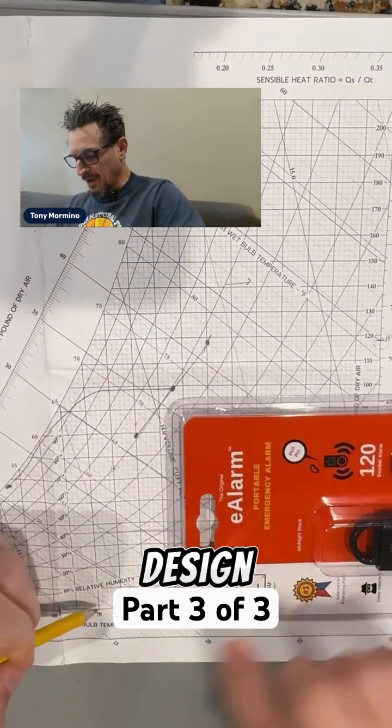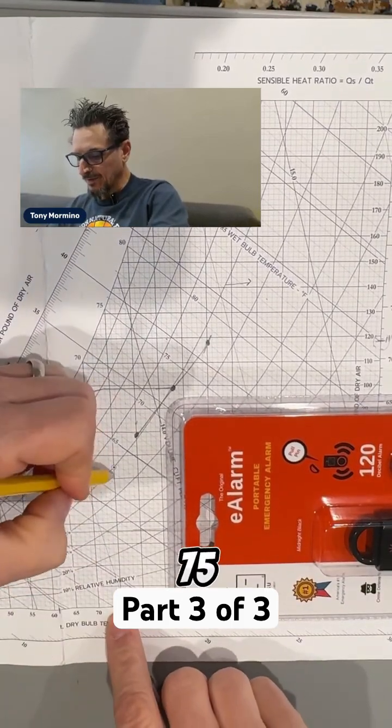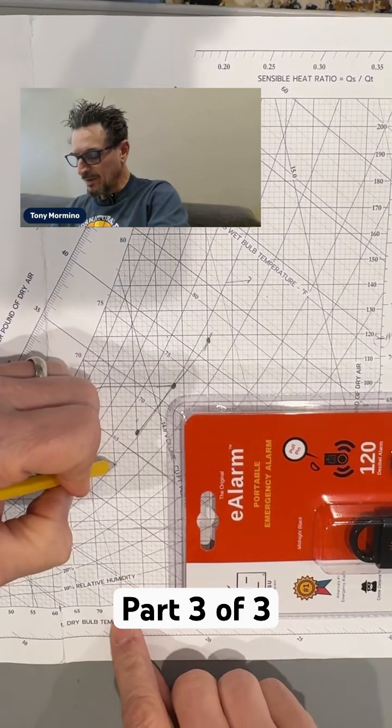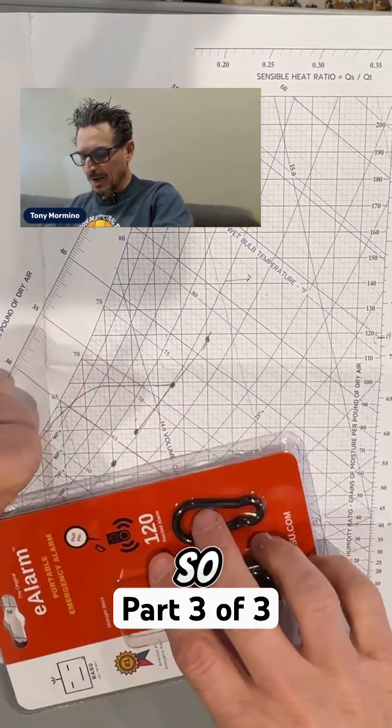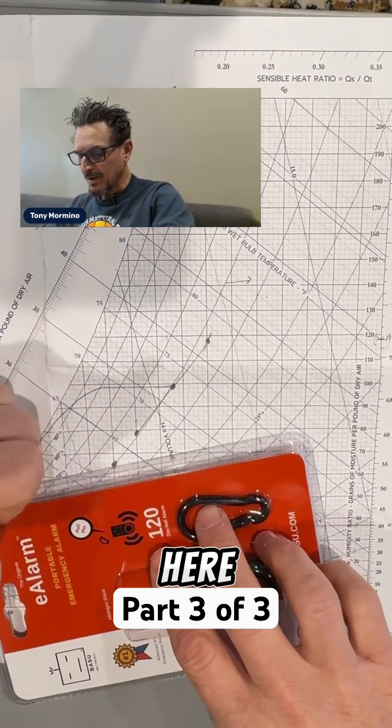And if my design objective is 75, 50 percent, I would plot that here. So I know I need to get from here to here.